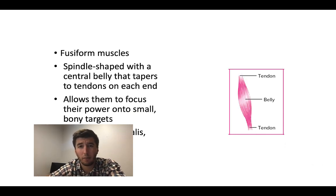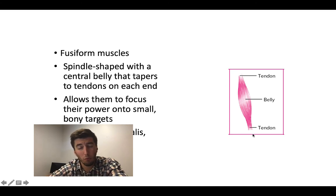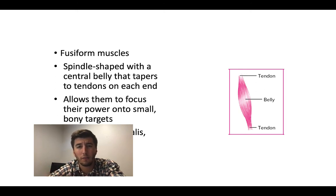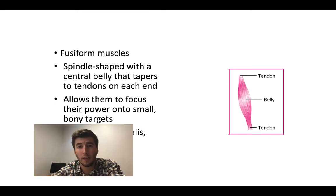We're also going to have fusiform muscles. A great example is the biceps brachii. What you have is a spindly shape — a tendon, a bulbous muscle belly, and then it goes back into the tendon. What's really interesting about fusiform muscles is they direct their force onto small bony processes or small bony targets, so they're able to exert quite a bit of force across a small target area. The biceps brachii allows us to have flexion at the elbow.